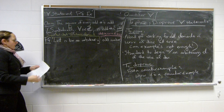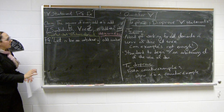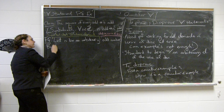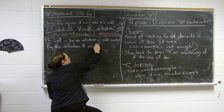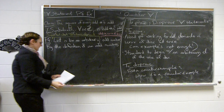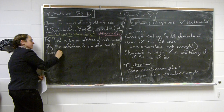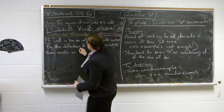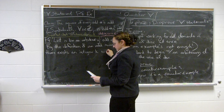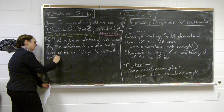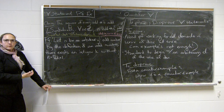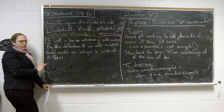We want to get our arbitrary element into a form we can work with. We know what odd numbers look like, so by the definition of an odd number, there exists an integer k such that n equals 2k plus 1. This is very common — to actually do something in your proof, you need to express your arbitrary element in a workable form.